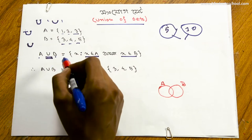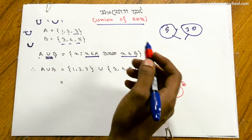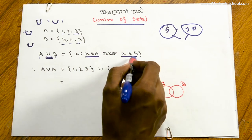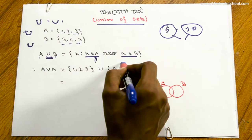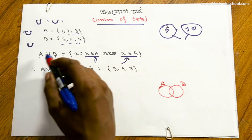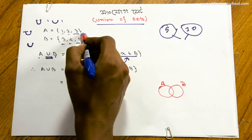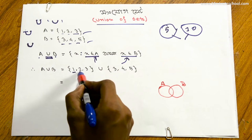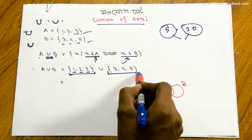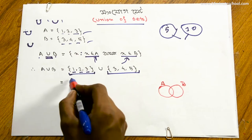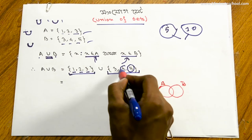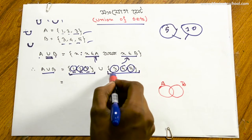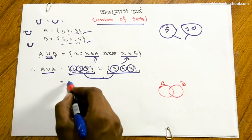A union B ની સેટ આ રીતે સમજો — AB ની condition based on A and B, A union B ની definition. We will decide to use A set and B set, and we will decide what elements are complete in A union B.